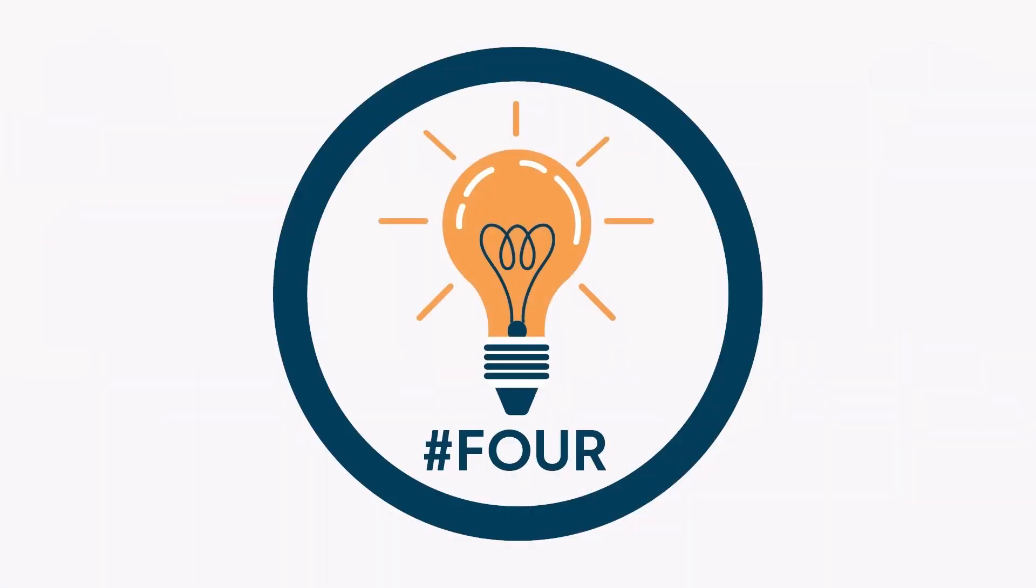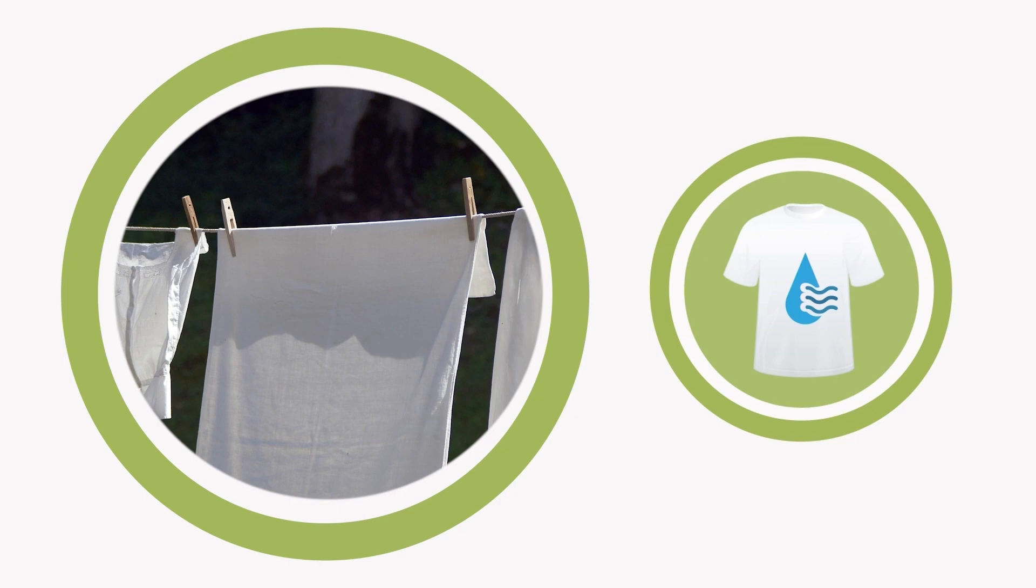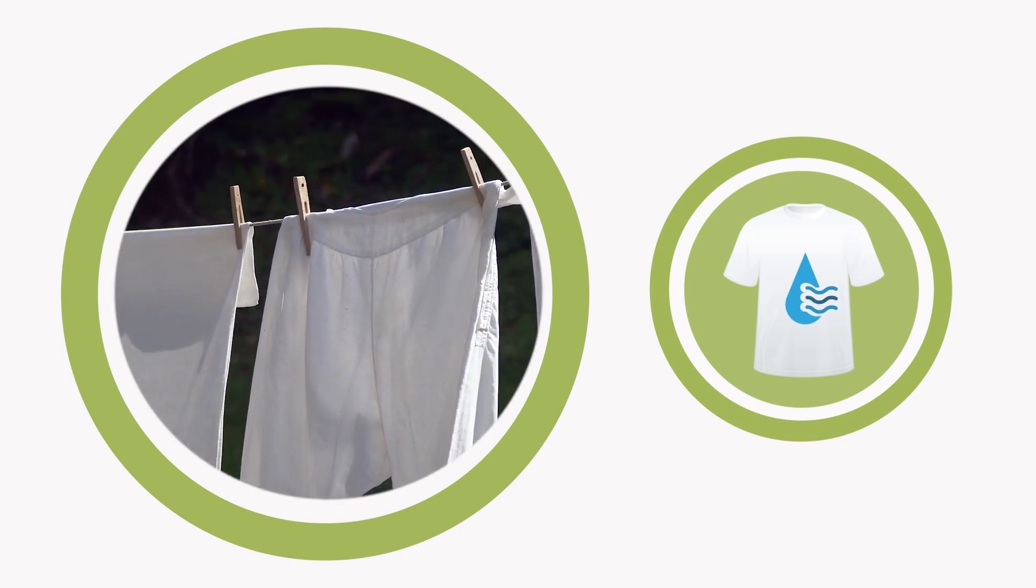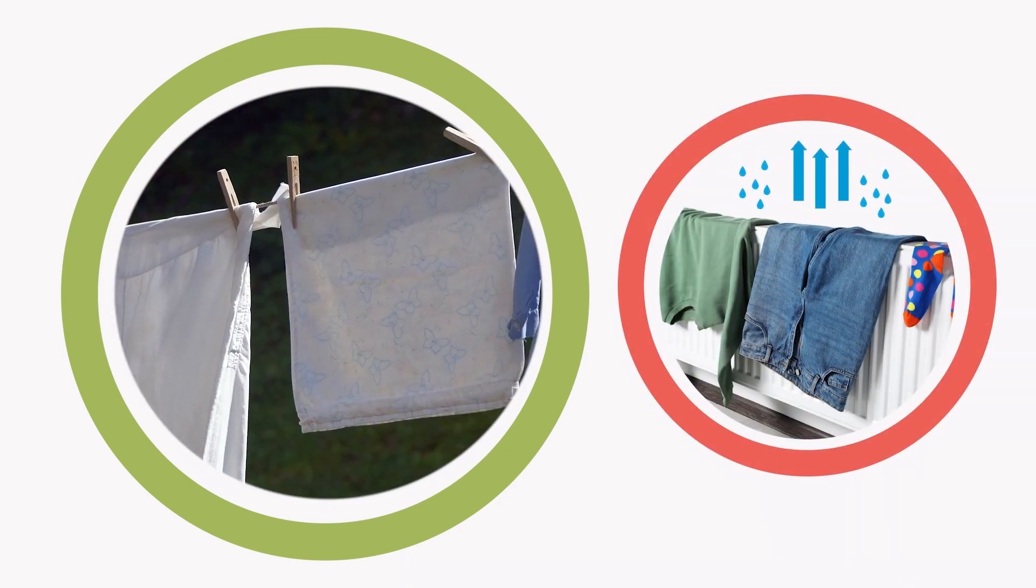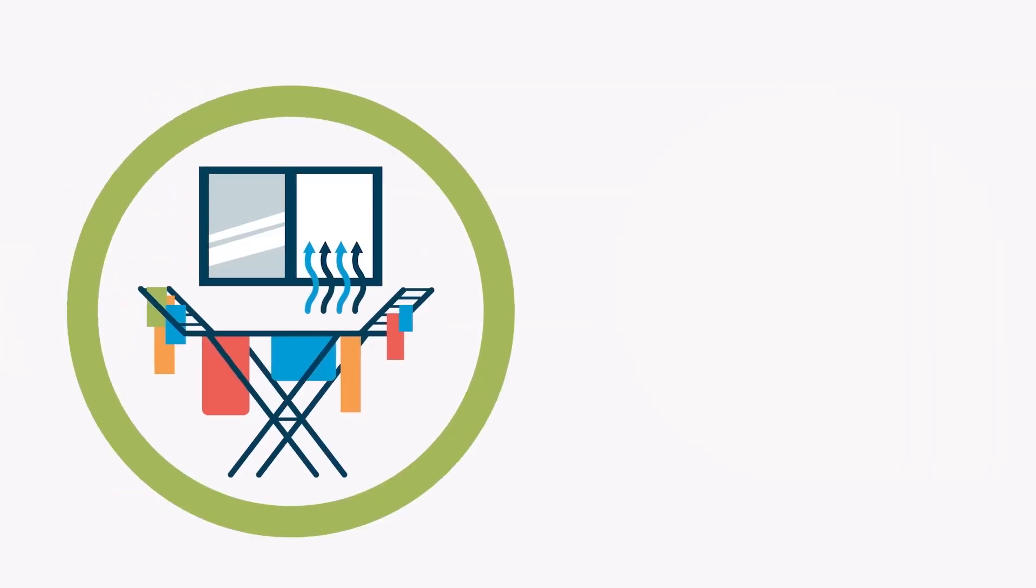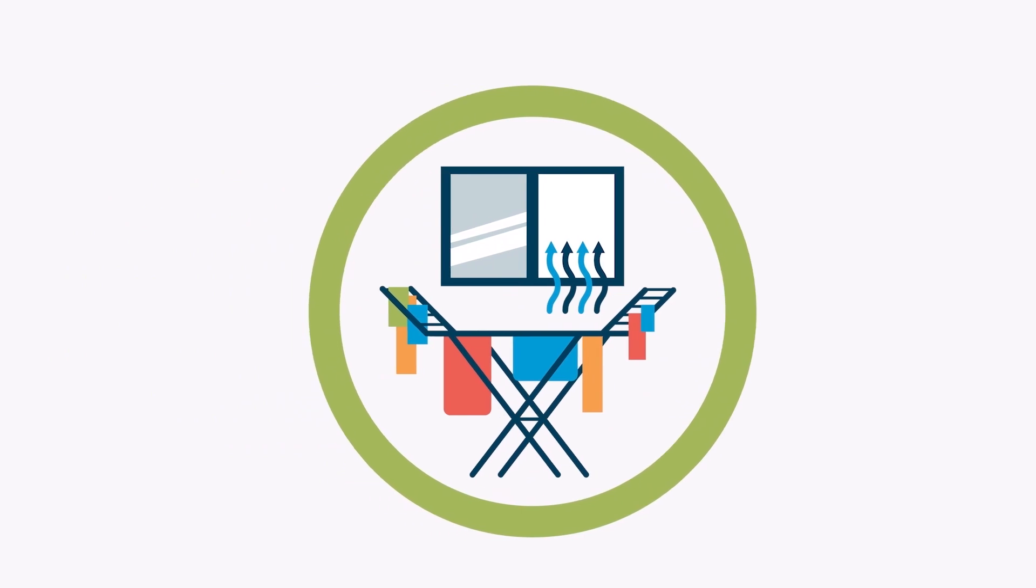Tip number four. Drying laundry releases a lot of moisture into the air. So dry your washing outside whenever you can. And when that's not possible, it's better not to put your laundry over a radiator to dry. Instead, place your drying rack in the middle of a cooler room where you can shut the door and open a window.